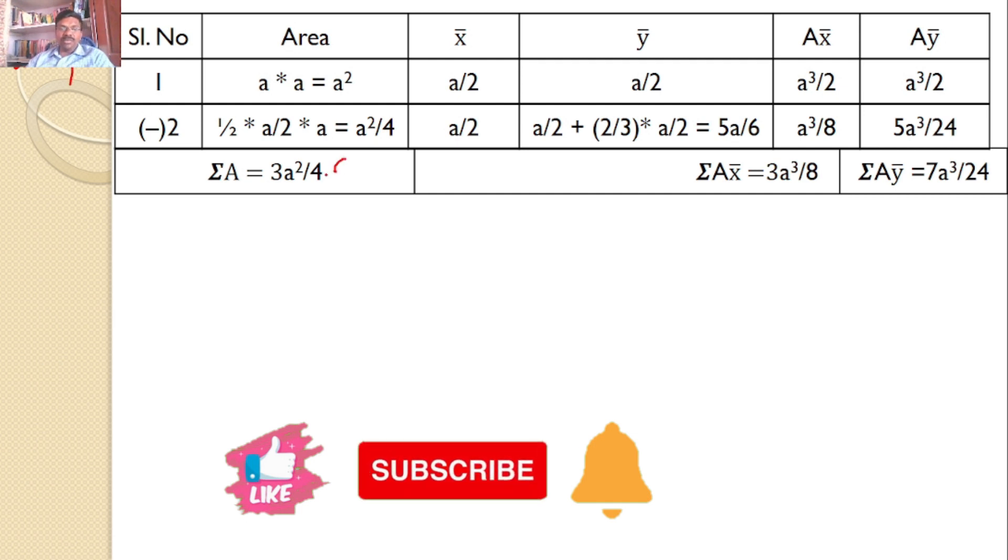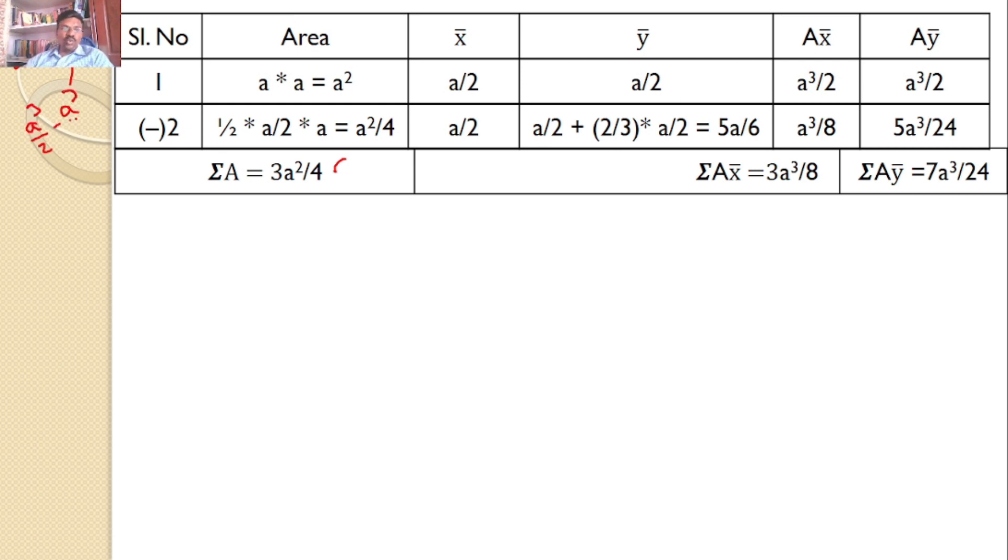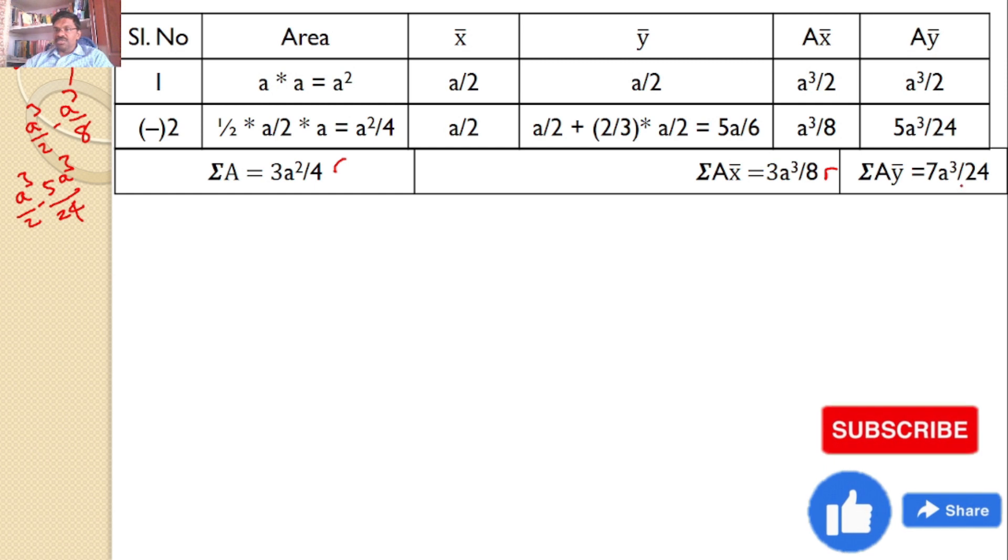which is equal to 3a squared by 4. And then sigma A x bar, sigma A x bar is a cubed by 2 minus a cubed by 8, which gives the value 3a cubed by 8. And A y bar is also equals to a cubed by 2 minus 5a cubed by 24, which gives the value 7a cubed by 24.